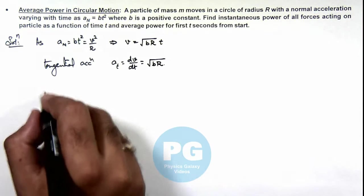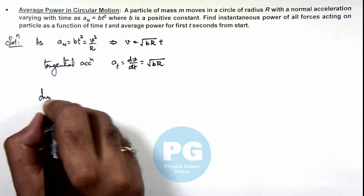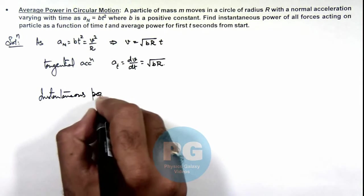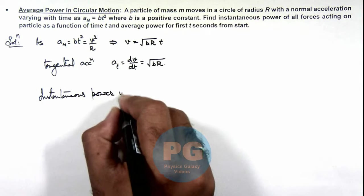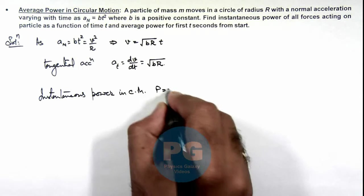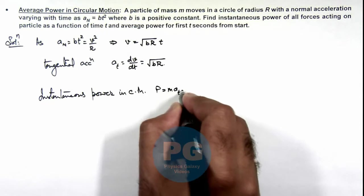And we know that instantaneous power in circular motion can be given as m·ay_tangential multiplied by v.